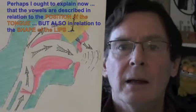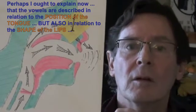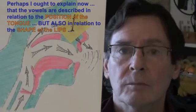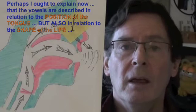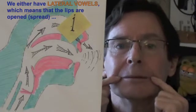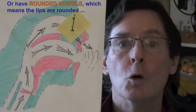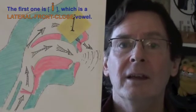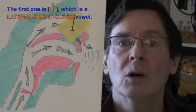Perhaps I ought to explain that vowels are described in relation to the position of the tongue, but also in relation to the shape of the lips. We either have lateral vowels, which means the lips are spread open, or rounded vowels, which mean the lips are rounded. The first one is the E, which is a lateral front close vowel.